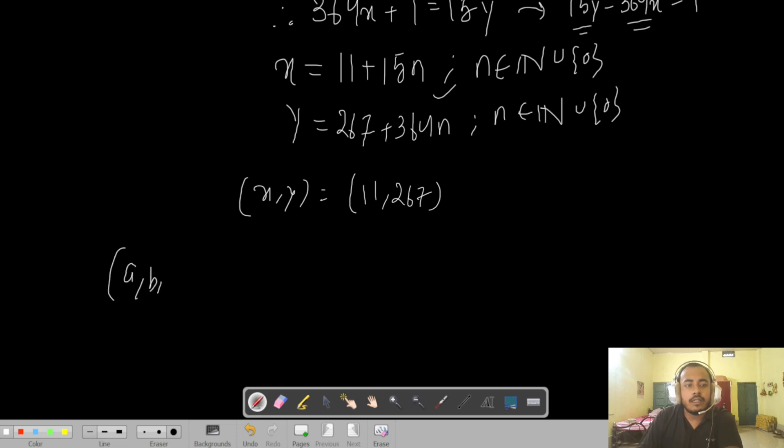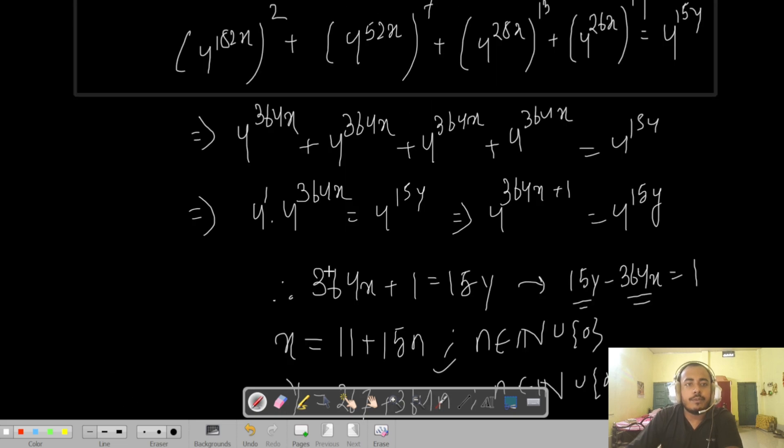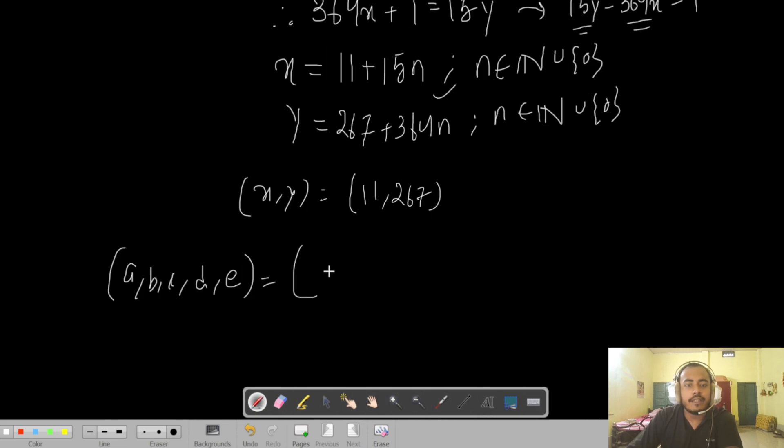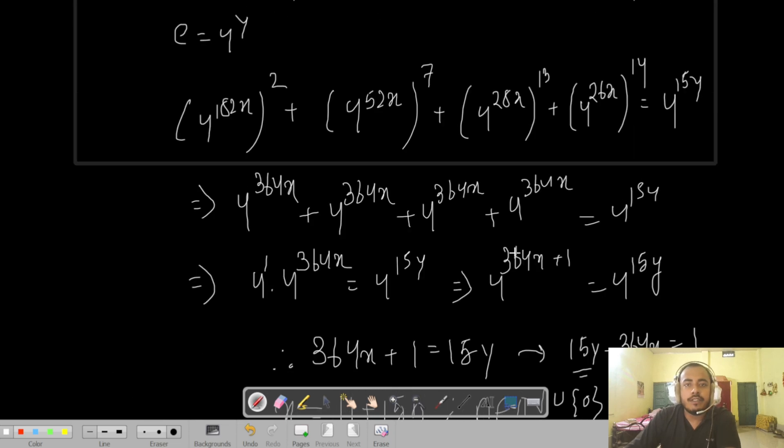a was 4 to the power 182x, so basically 4 to the power (11 plus 15n) times 182. This would be a. Now b would be 4 to the power, and we would see b was 52x, so basically 52 times (11 plus 15n).